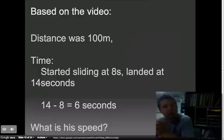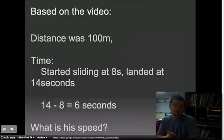So the distance between the ramp, the start of the ramp, and the pool was 100 meters. And the time they started sliding was 8 seconds, and they landed at 14 seconds. So we're going to have to do a little math there. So the total time they were moving was 6 seconds, so 14 minus 8. So if we know the distance was 100 meters and we know the time is 6 seconds, can we figure out his speed?